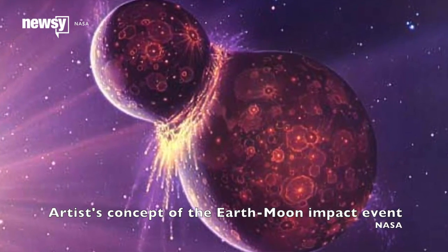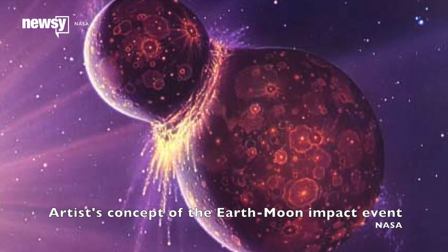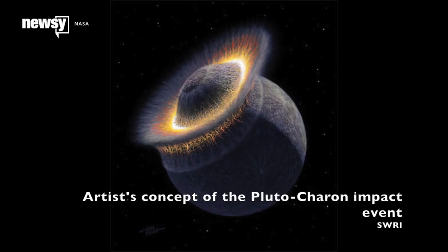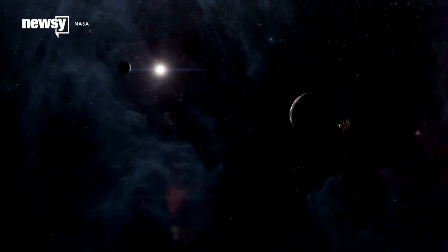Our own moon was formed from debris after a Mars-sized planet smashed into the early Earth. Similarly, Charon was formed when a Pluto-sized body smashed into a young Pluto.